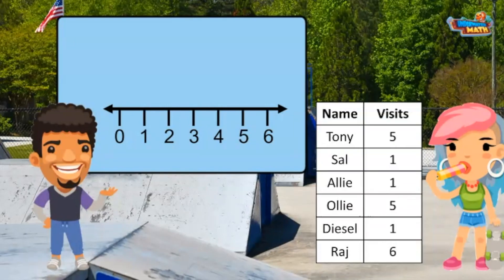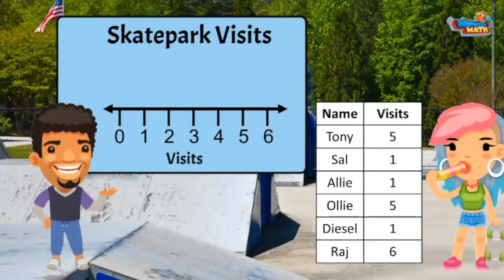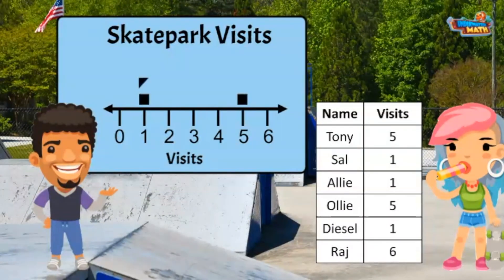I collected data shown in the chart here. It shows how many times each of our friends visited the skate park this week. I know to start with the title — I think 'Skate Park Visits' works well here. The numbers on this line represent visits, so I will put the label below the numbers. Tony, it looks like you visited the park five times, so let's put a dot above the five. Sal and Ali both had one visit, so I put two dots above the one.